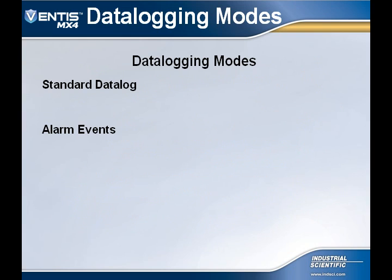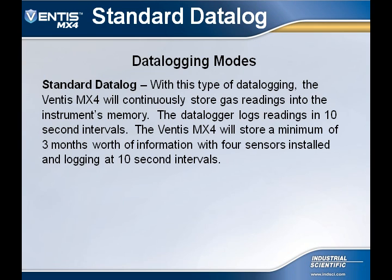The Ventus MX-4 has two data logging modes: the standard data log and the alarm event data log. With the standard data log, the Ventus MX-4 performs data logging at 10-second intervals and can hold approximately 3 months of data for a 4-sensor configuration. Readings are time-stamped and stored in a first-in, first-out FIFO queue that is overwritten when full.